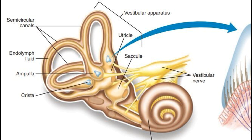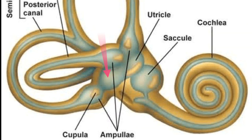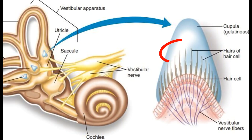The semi-circular canals are responsible for detecting rotational movements of the head, like shaking our head no or nodding yes. These three canals are oriented at right angles to each other, allowing them to sense rotation in all three planes of motion. Each canal is filled with a fluid called endolymph. When we rotate our head, the endolymph within the canals lags behind due to inertia, pushing against a gelatinous structure called the cupula, which sits atop hair cells. The bending of these hair cells generates electrical signals transmitted to the brain via the vestibular nerve, which then interprets the direction and speed of head rotation.